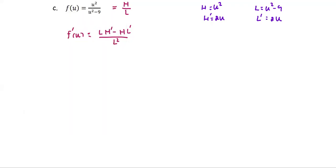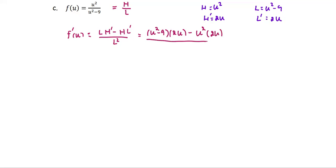By using the quotient rule, the low is the quantity u squared minus 9, multiplied by d high, which is 2u, minus the high, u squared, multiplied by the d low, which is 2u, all divided by the low squared, which is the quantity u squared minus 9, squared.